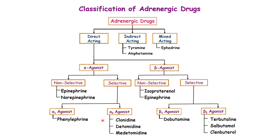This diagram shows the classification of adrenergic drugs based on their mechanism of action. The first and clinically important classification is the direct-acting adrenergic drugs, which act directly on adrenergic receptors as agonists. Agonists are drugs that have affinity to the receptor, bind to it, and have intrinsic activity. Under direct-acting, we have alpha and beta agonists. Alpha agonists can be non-selective — stimulating alpha-1 or alpha-2 — or selective, such as alpha-1 or alpha-2 specific agonists.